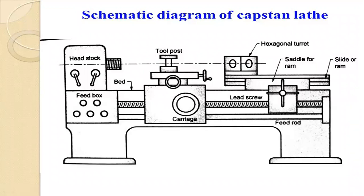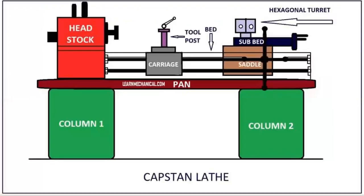Observing the diagram again, the different parts in the capstan lathe include: feed box, headstock, tool post, belt, carriage, lead screw, feed rod, slide or ram, saddle for ram, and hexagonal turret. The capstan lathe consists of parts such as column one, column two, pan, headstock, carriage, saddle, auxiliary slide, and tool post — all assembled together.